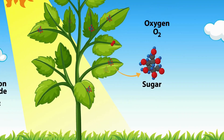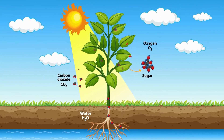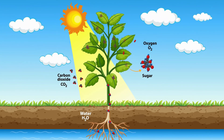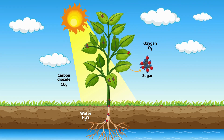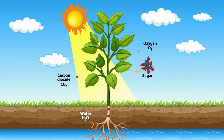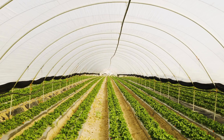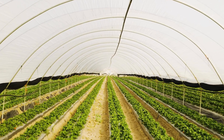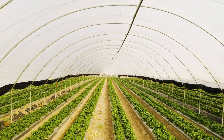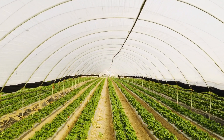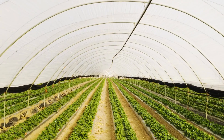The glucose produced through photosynthesis serves as the primary energy source for plants. It's used for growth, reproduction, and other vital processes. Additionally, oxygen, a byproduct of photosynthesis, is essential for the survival of most living organisms, including us humans.